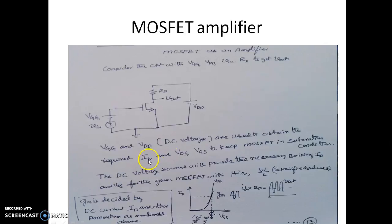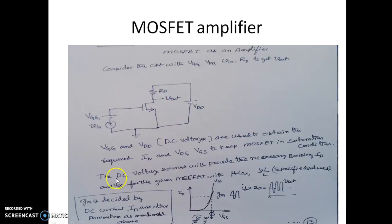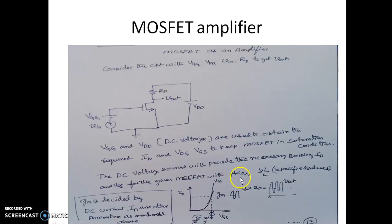VGG and VDD are DC voltage sources required to set the DC current ID, and the VDS and VGS to keep the MOSFET in saturation condition. Only when the MOSFET is operating in saturation can it be used as an amplifier. The DC voltage sources provide the necessary biasing so that the required DC drain current flows and VDS keeps the MOSFET in saturation.